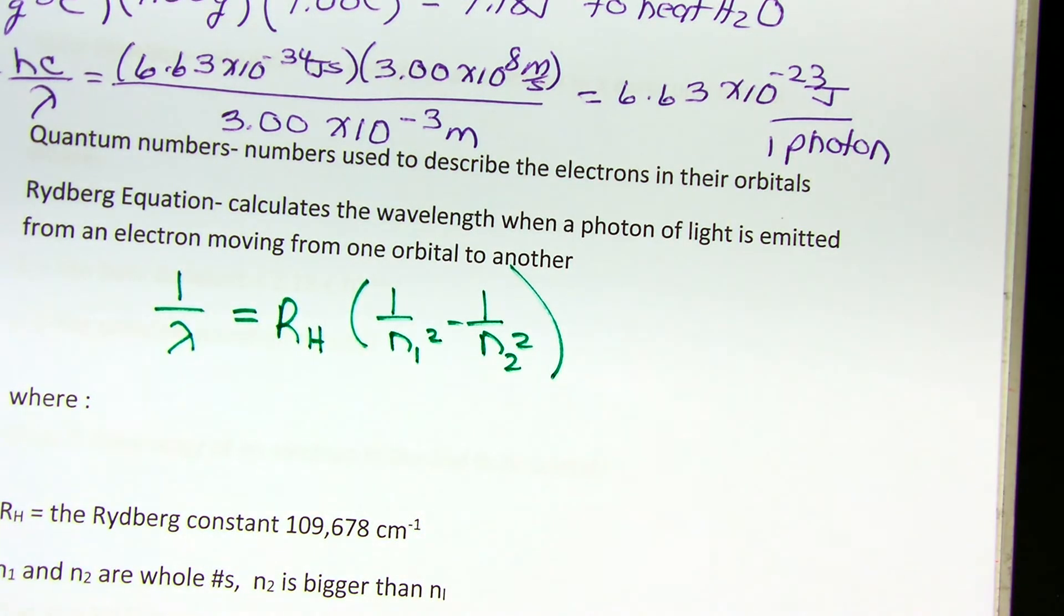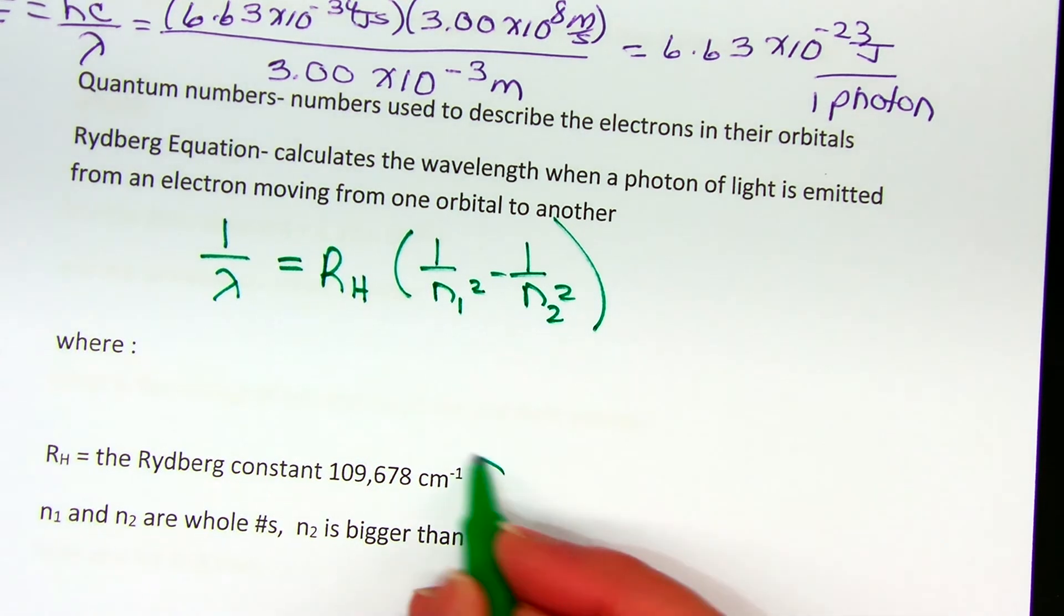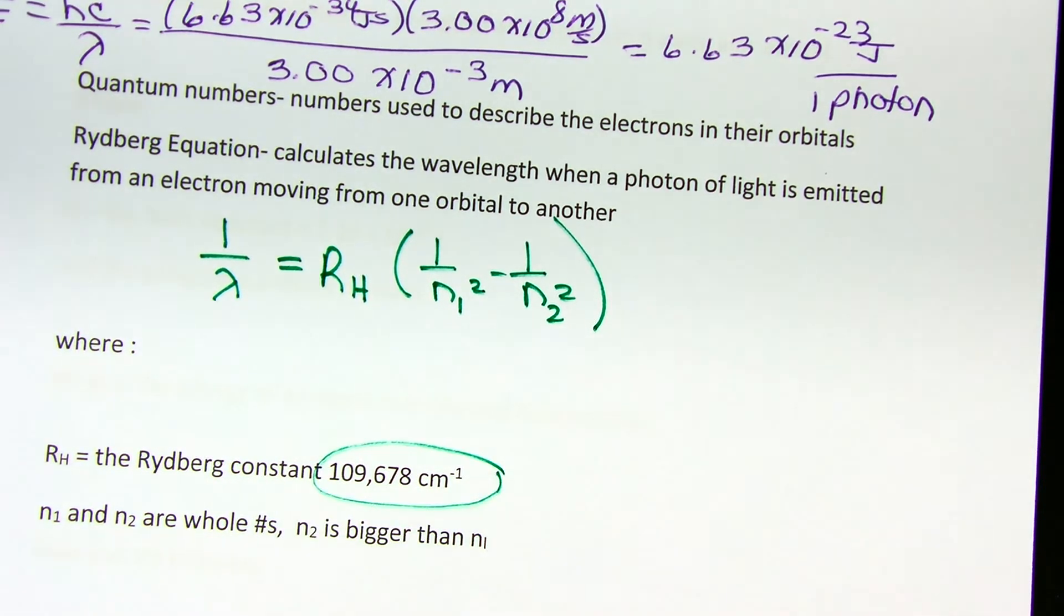That's the Rydberg equation. R sub H is the Rydberg constant, and it's given to us in the textbook having six significant figures. n1 and n2 are principal quantum numbers. They are whole numbers and they are integers. When we deal with this, most of the time we'll be setting this up so that n2 is a bigger number, a bigger integer than n1.